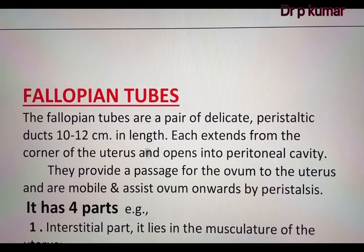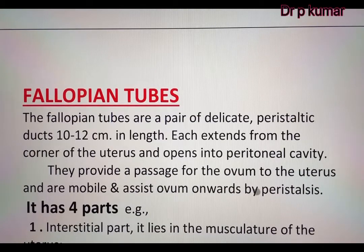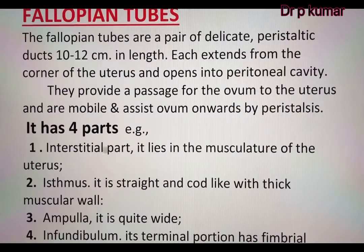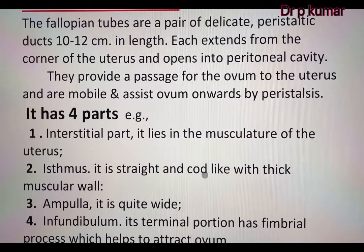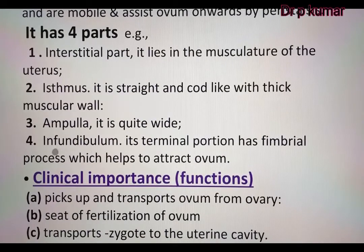Fallopian tubes: The fallopian tubes are a pair of delicate peristaltic ducts, 10 to 12 cm in length. Each extends from the corner of the uterus and opens into the peritoneal cavity. They provide a passage for the ovum to the uterus and are mobile, assisting the ovum onward by peristalsis. It has four parts: the intrastital part, which lies in the musculature of the uterus; the isthmus, which is straight and cord-like with a thick muscular wall; the ampulla, which is quite wide; and the infundibulum, whose terminal portion has fimbrial processes which help to attract the ovum.